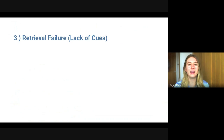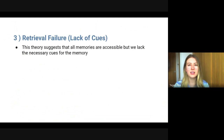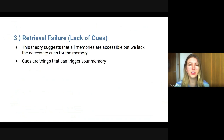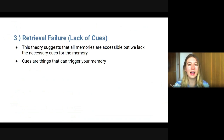And then retrieval failure, which can also be called lack of cues. This theory suggests that all memories are accessible — we might just lack the necessary cues for the memory. It's like having something on the tip of your tongue; you can't quite get it out and need a cue to help you get there. A cue is anything that can trigger your memory — for example, a smell, a particular word, a picture, anything that might cause you to remember something.